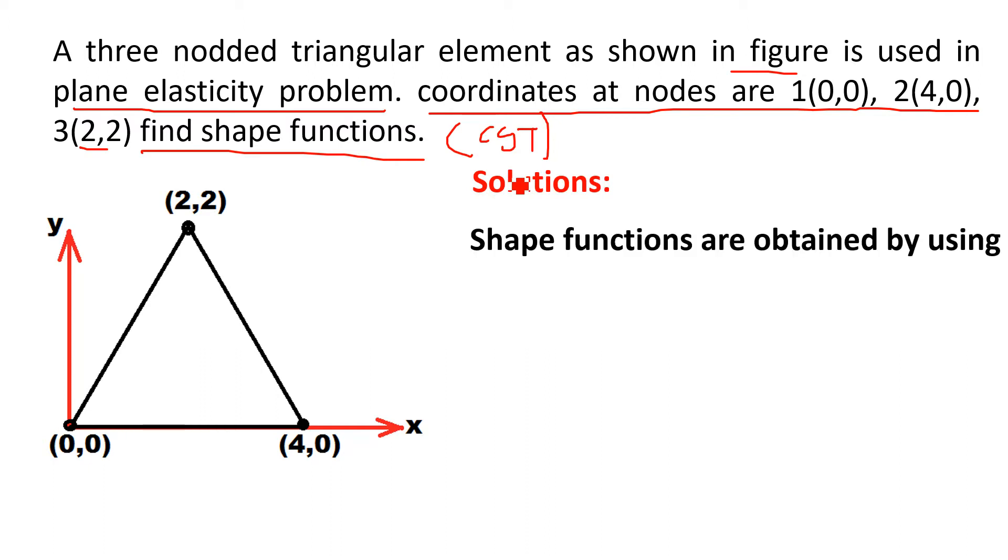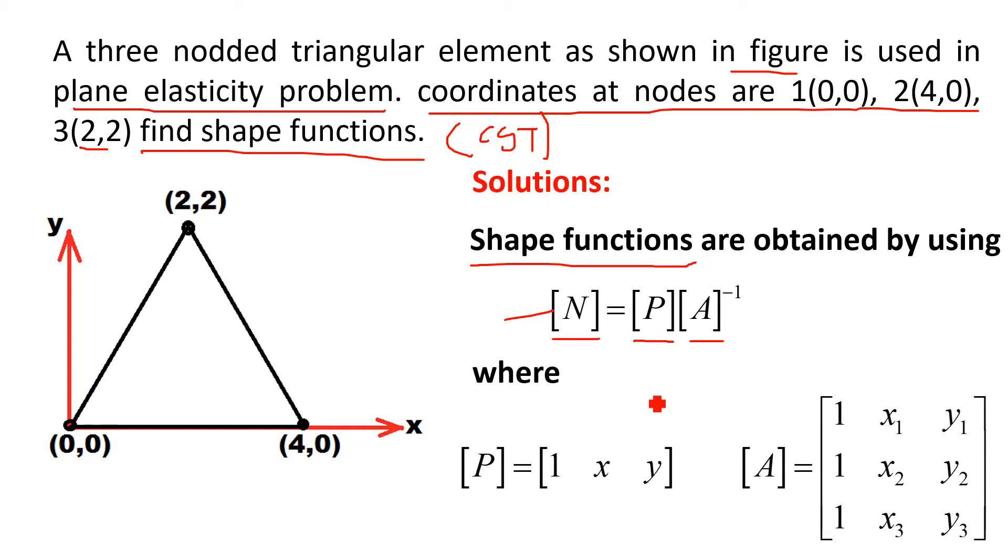Now, solution steps. We know that in previous three-four lectures, we have seen how to determine the shape functions of various element. Shape functions can be determined using P into A inverse. N represents the shape function vector, P represents the parametric matrix, A represents the connectivity matrix and inverse of that.